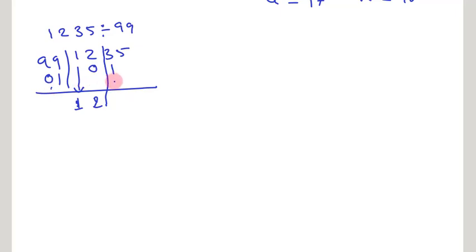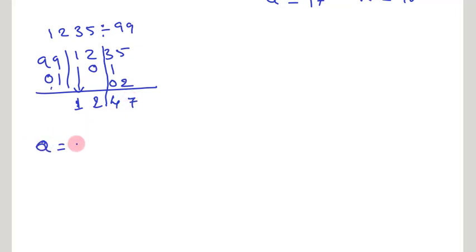Then again multiply: you get 0, 2. Adding, you get 47. By this you get quotient is 12 and remainder is 47. It is just addition itself.